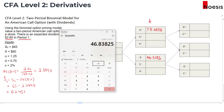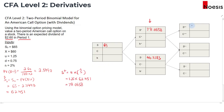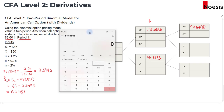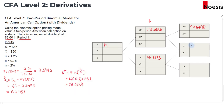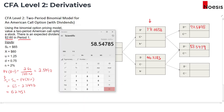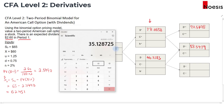Now we move on to the second period where the share price will again go up or down. Taking the previous period's price, S++ will be 78.0638 multiplied by 1.25, so that's 97.5798. For S+-, we take 78.0638 times 0.75, which gives 58.5479. You could also take 46.8383 times 1.25 to get the same 58.5479. For S--, 46.8383 times 0.75 gives us 35.1287.